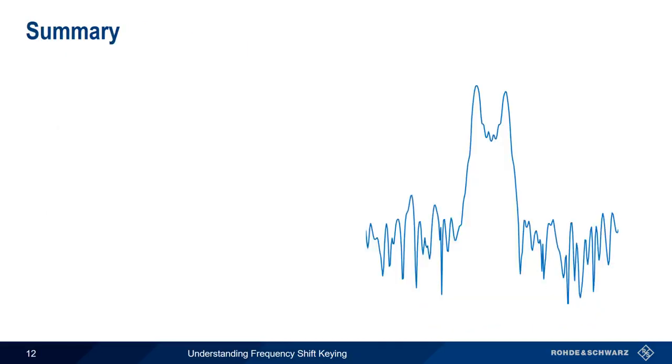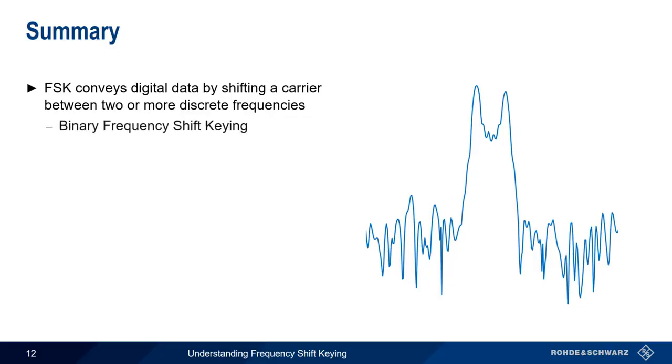In summary, Frequency Shift Keying, or FSK, conveys digital data by shifting a carrier between two or more discrete frequencies, with each frequency representing one or more bits. Binary Frequency Shift Keying has only two different frequencies, called mark and space, whereas M-ary FSK uses more than two frequencies.